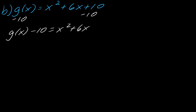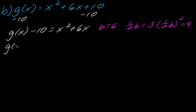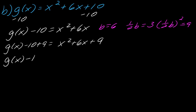Now I can complete the square. My b in this case is six. My half-b will be three. And my half-b squared will be nine. So now I need to add nine to each side: g(x) minus 10 plus nine equals x squared plus 6x plus nine. Collecting like terms on the left gives g(x) minus one, and on the right I factor as x plus three squared.